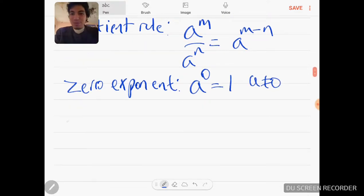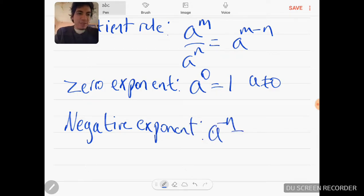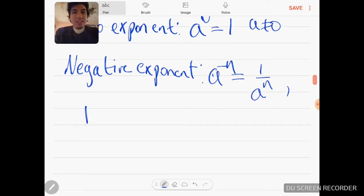Last thing for exponents was negative exponent, where it's a to the negative N. If it's in the numerator, it's going to go down to the denominator and you change the sign. If it's in the denominator negative, it's going to go to the numerator and it's going to be positive, as long as a is not equal to zero. That's another stipulation you have to add for that one as well.